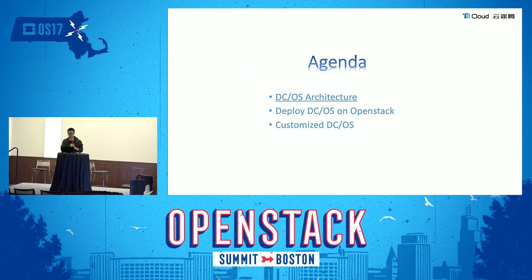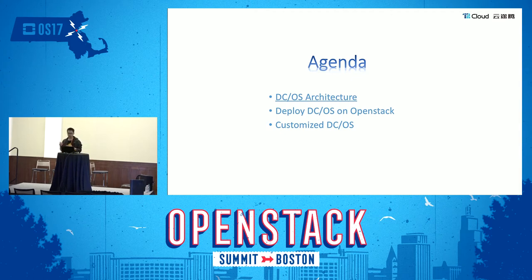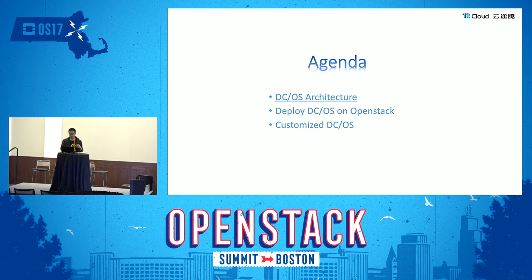My agenda contains three parts. Part one is about DCOS-related things, such as the architecture and who and why we use it. Part two is about DCOS deployment. DCOS can be deployed anywhere, so the main work is to provide an improved structure regardless of the provider — whether it's AWS, OpenStack, or any container engine environment. Part three is about the work we have done and what we are going to do.